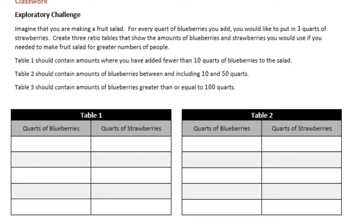Imagine that you are making a fruit salad. For every quart of blueberries you add, you would like to put in three quarts of strawberries. Create three ratio tables that show the amounts of blueberries and strawberries you would use if you needed to make fruit salad for greater numbers of people. Table 1 should contain amounts where you've added fewer than 10 quarts of blueberries. Table 2 should contain amounts of blueberries between and including 10 and 50 quarts. Table 3 should contain amounts of blueberries greater than or equal to 100 quarts.